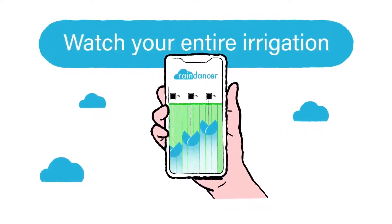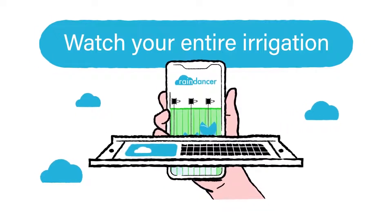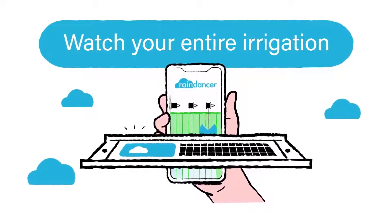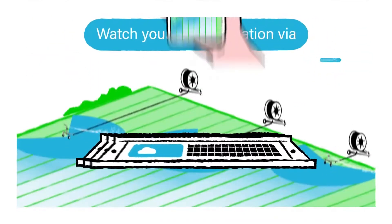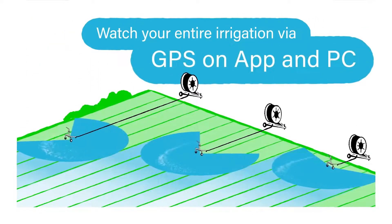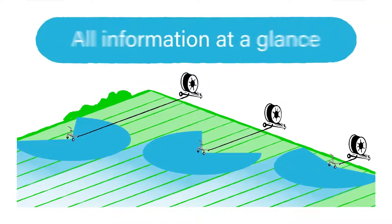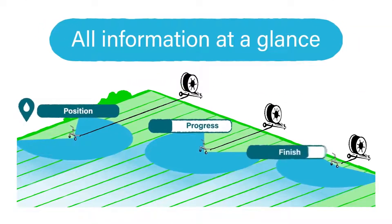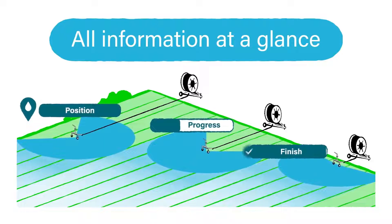Watch your entire irrigation by GPS, all available on your smartphone and your PC. You'll get all information at a glance. You'll see the current position, the progress, and you will see when an irrigation finishes.